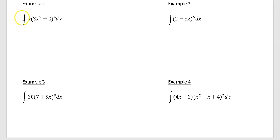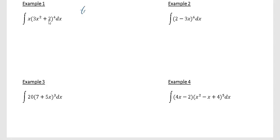What we're doing in integration by inspection is thinking: what do I have to differentiate so that my result is this thing? I know I'm going to have somewhere 3x² + 2, and what I'm going to do is raise the power of this so it's (3x² + 2) to the power of 5. I'm going to differentiate that and see what I get — quite often it works, but quite often it doesn't.